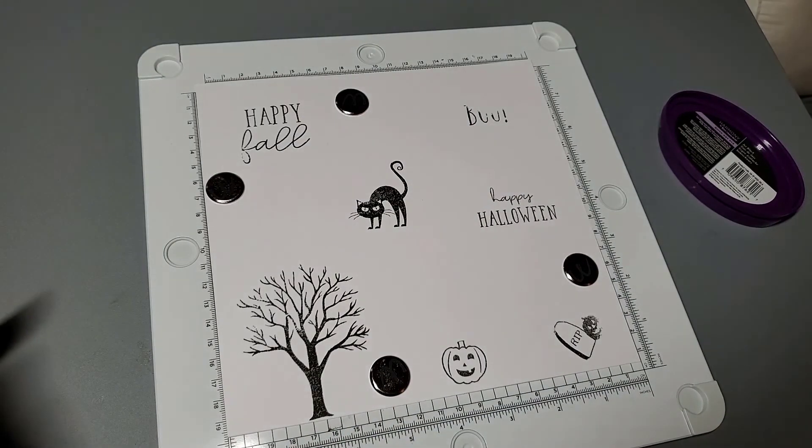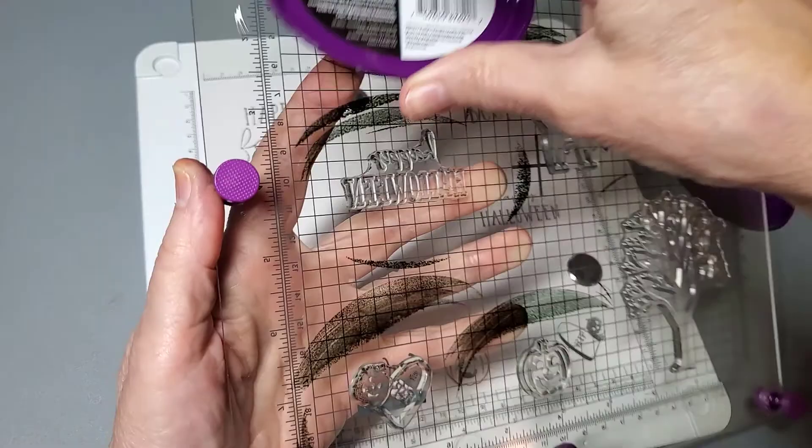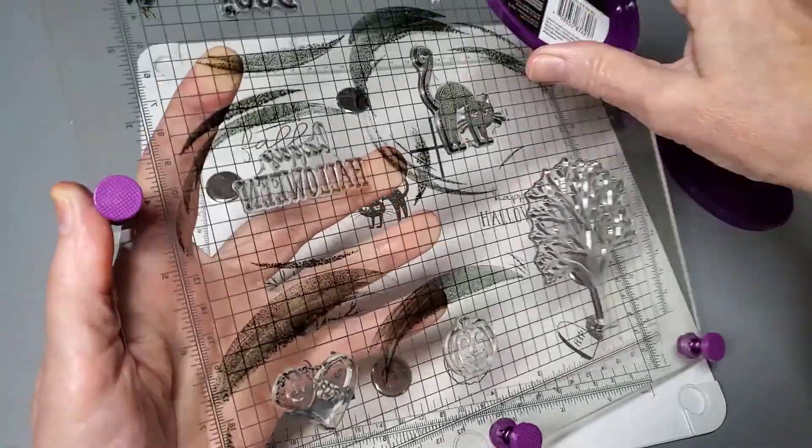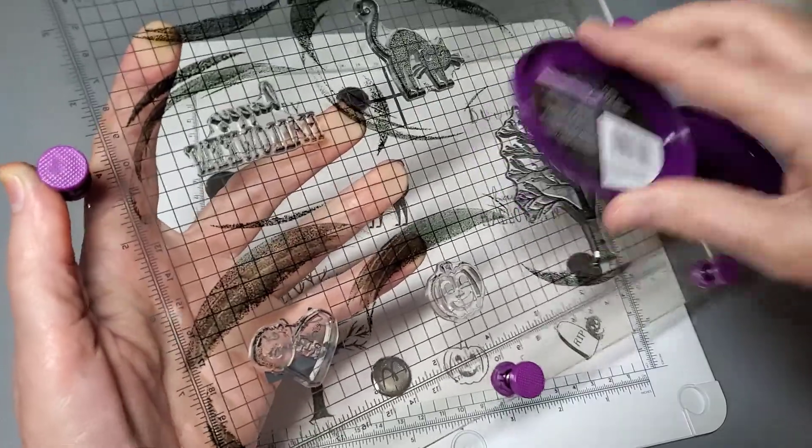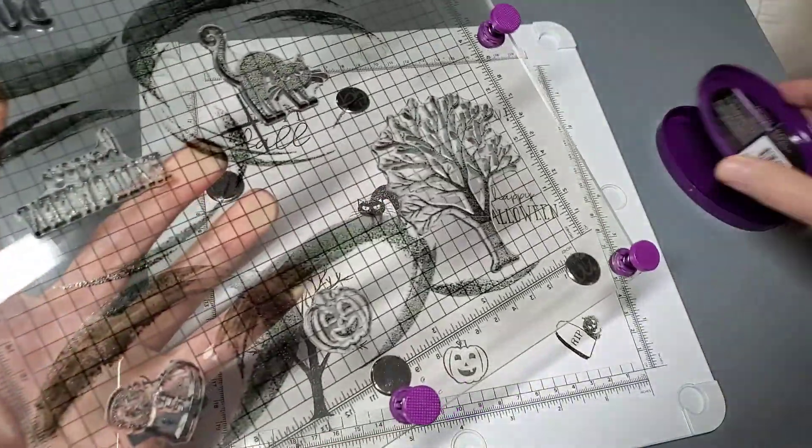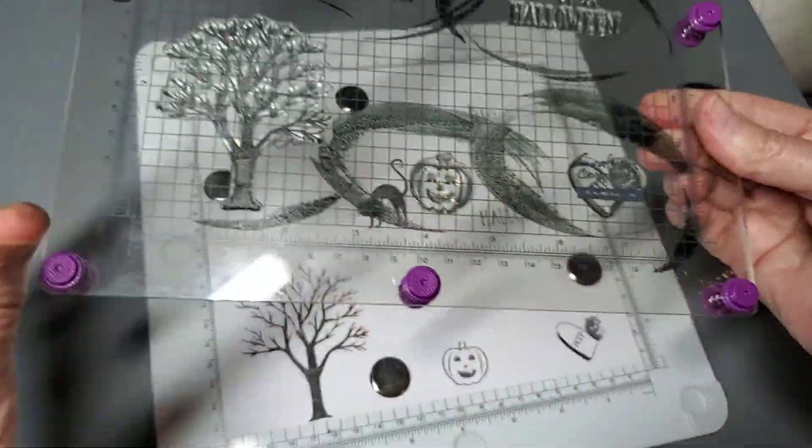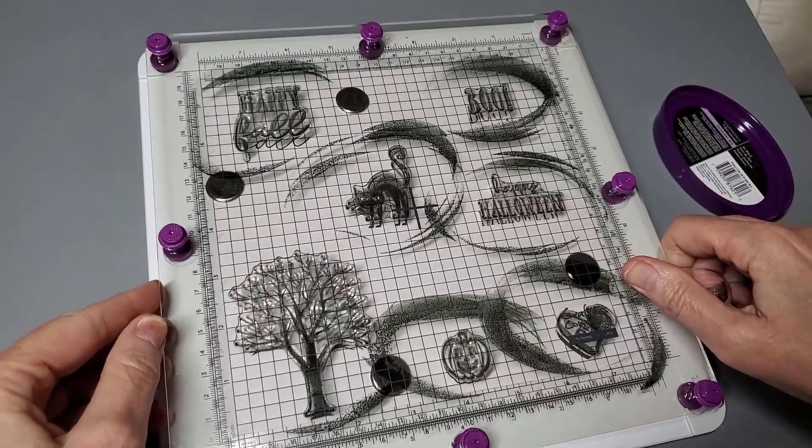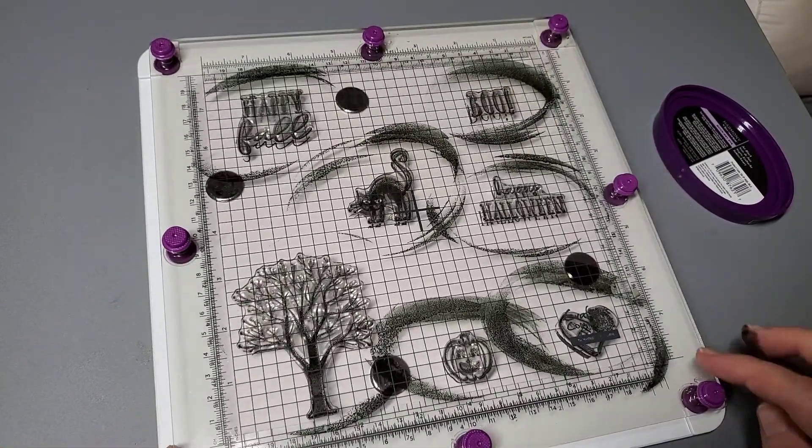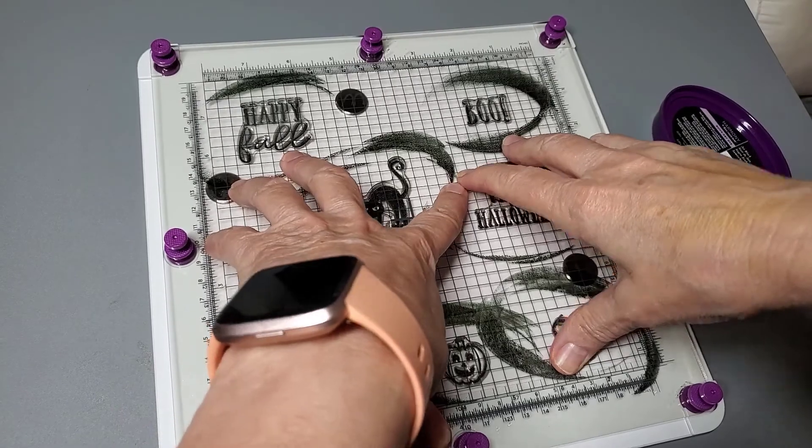My boo didn't come out the best and my fall is a little off, so I'm just going to stamp my boo again. I might as well just go around and do them all. It could be that I didn't press down in that spot or I didn't ink it well, but it'll be fine because the platform goes right back in place. I make sure my little Crafter's Companion logo is down in this bottom right corner so I don't turn it and put it on wrong.